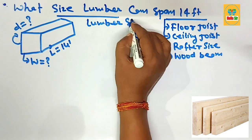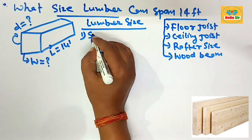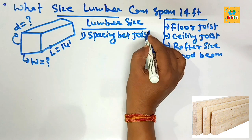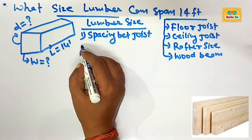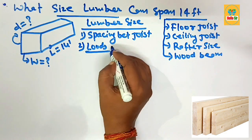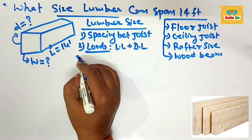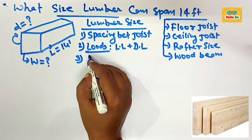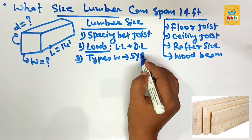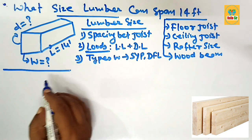The factors that determine the lumber size required to span 14 feet are: first, the spacing between the joists, which should be 12 inches on center or 16 inches on center; second, the load — consisting of live load and dead load; and third, the species and grade of wood, such as SYP, DFL, or similar types.